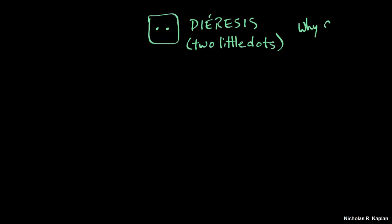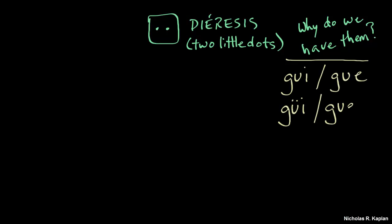And you ever wonder what they do? Well, they change the way that we pronounce syllables, specifically when we have a GU plus an I or an E. So U plus two dots equals W.